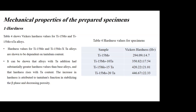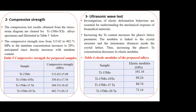For the mechanical properties of the prepared samples, first the hardness. As seen in Table 4, the hardness increases as the tantalum concentration increases. This is due to tantalum's function in stabilizing the beta phase and decreasing the porosity as shown in the earlier table. For the compressive strain, the compressive test results from the stress-strain diagram are shown in Table 5. The compressive strain increases with increasing tantalum concentration, as expected due to the increase in density with tantalum content.